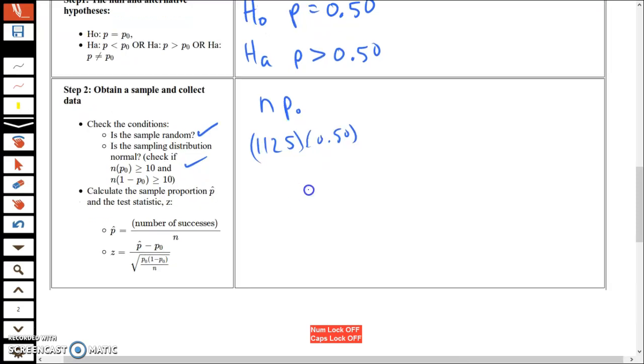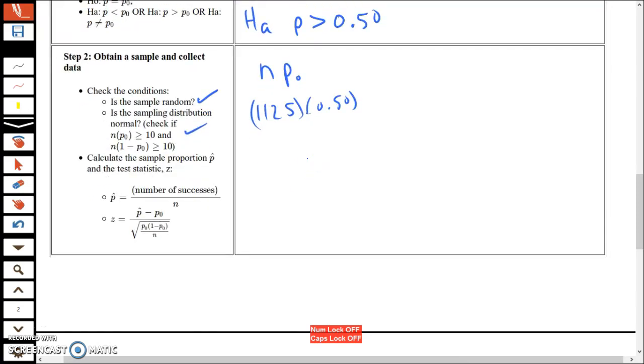P-hat is the number of successes divided by n. In this case, p-hat is just given to us. They divided for us, so 54%.